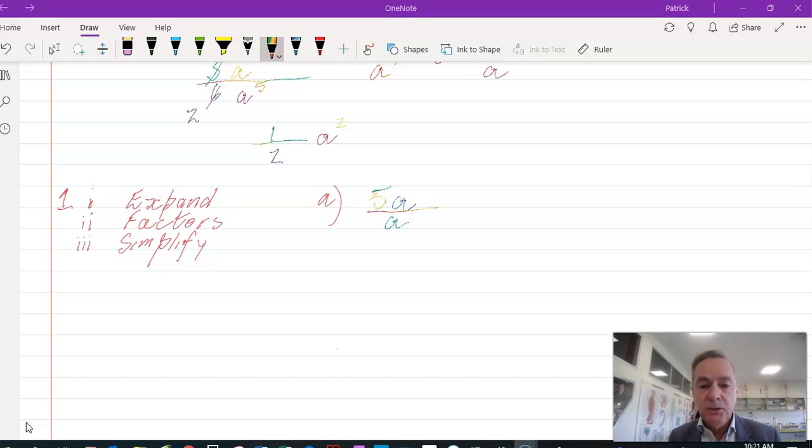In question 1, we're asked to do the long-handed way, or looking at exactly how it's done. In part 1, you're asked to expand. To expand 5a over a would equal 5 times a over a. In part 2, you're asked to look for any common factors. The common factors here would be a and a, so the answer would be 5. Pretty straightforward: expand it out in part 1, look for any common factors in part 2, and simplify in part 3.